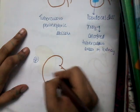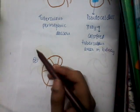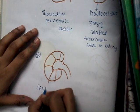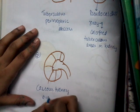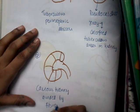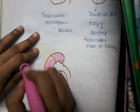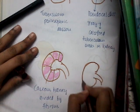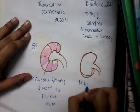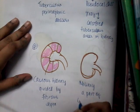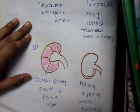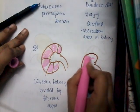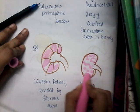The seventh type is a kidney with caseous necrosis divided by fibrous septa — this is the caseous kidney. The eighth and most severe form is miliary tuberculosis, which occurs as part of a general tuberculosis process. In miliary tuberculosis, there are many caseous necrosis areas throughout the kidney.